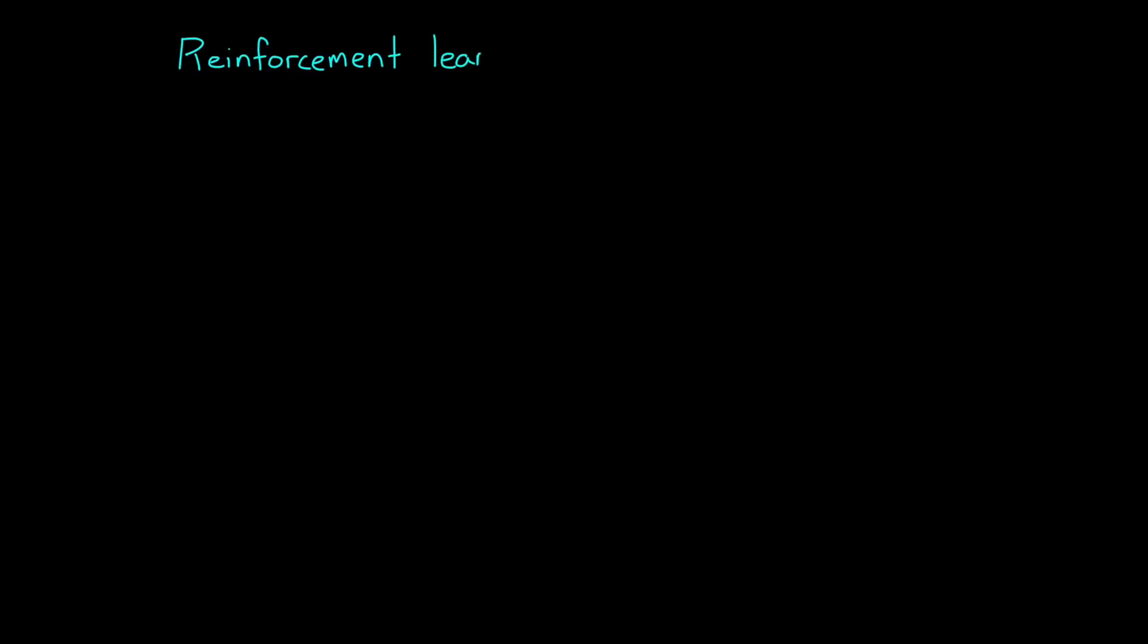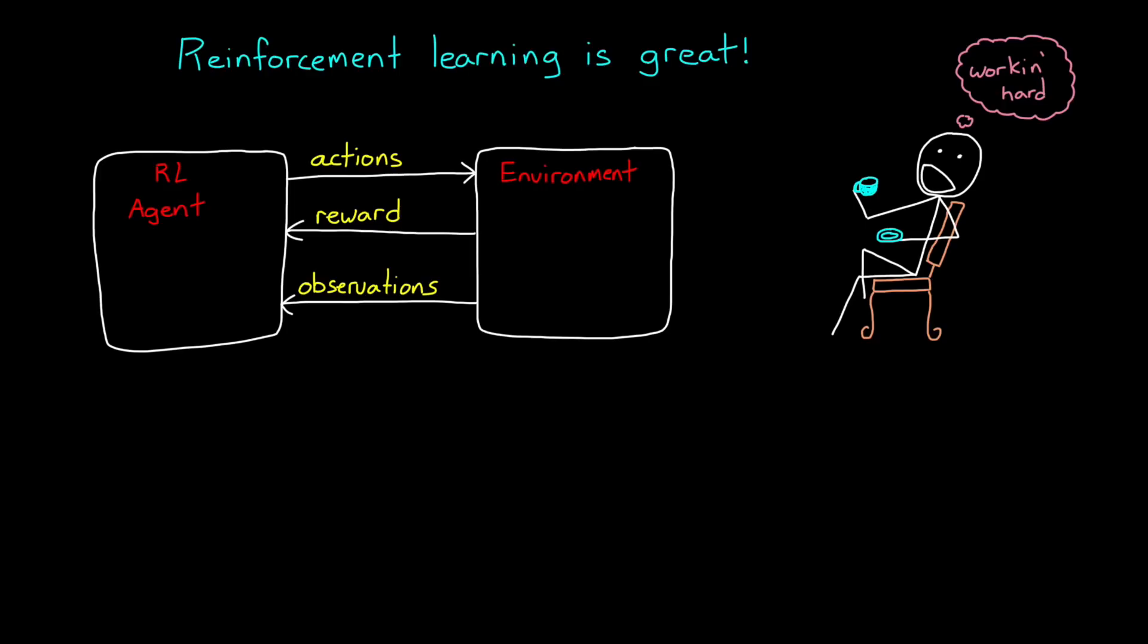The first four videos in this series covered how great reinforcement learning is and how you can use it to solve some really hard control problems. So you may have this idea that you can essentially set up an environment, place an RL agent in it and then let the computer solve your problem for you while you go off and drink a coffee or something.